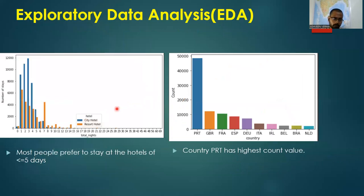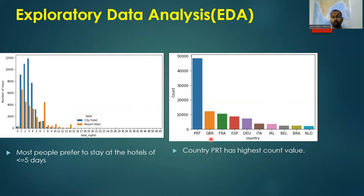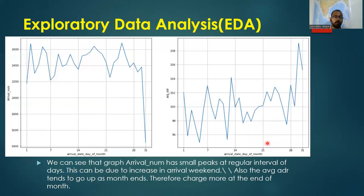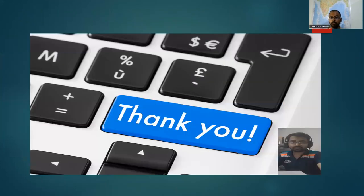From the total nights and number of stays graph, the total number of stays is maximum in city hotels up to five days, after which resort hotels take over. From the countries and count graph, Portugal (PRT) has the highest count, while Belgium and the Netherlands have the lowest. The arrivals graph shows small peaks at regular day intervals, possibly due to increased weekend arrivals. Average ADR tends to go up toward the end of the month.